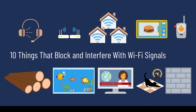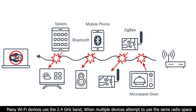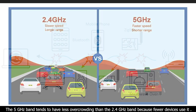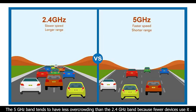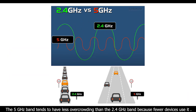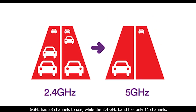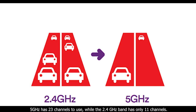A connection on a particular frequency band can also be affected by interference from other devices. Many Wi-Fi devices use the 2.4 gigahertz band, and when multiple devices attempt to use the same radio space, overcrowding occurs. The 5 gigahertz band tends to have less overcrowding than the 2.4 gigahertz band because fewer devices use it.